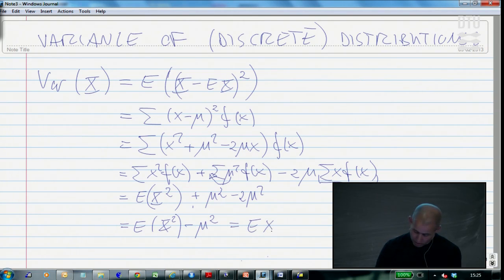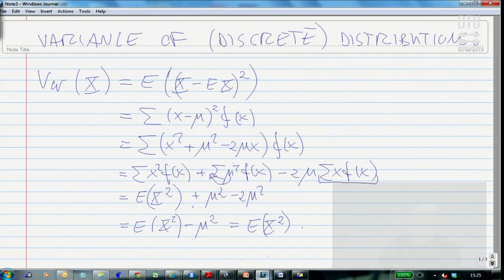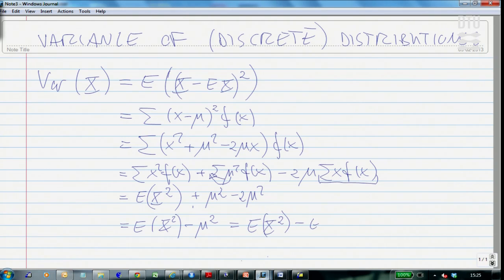Or differently put, the mean of x squared minus the mean of x, squared. This is a general way of finding a variance in terms of the mean of squares and the square of the mean.